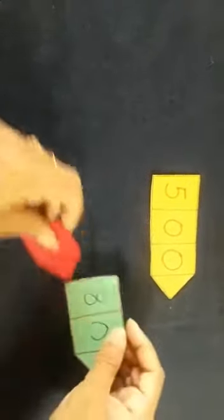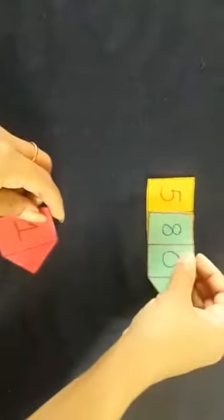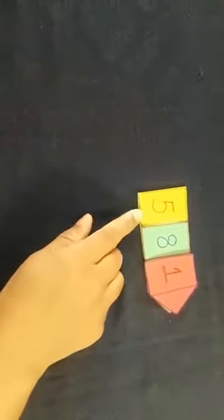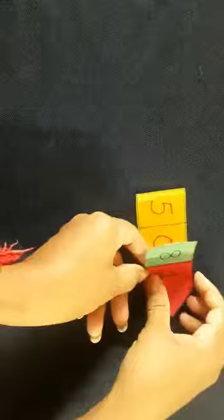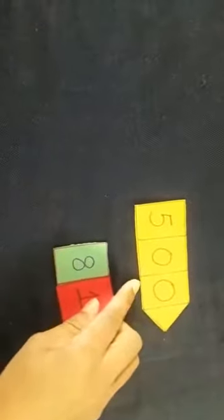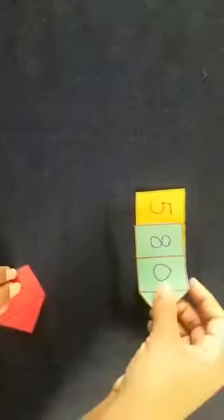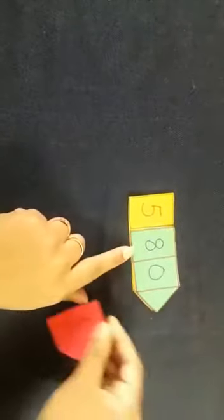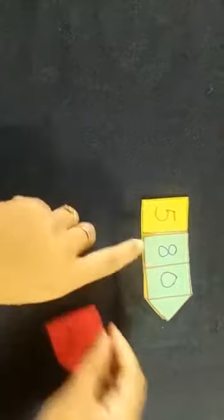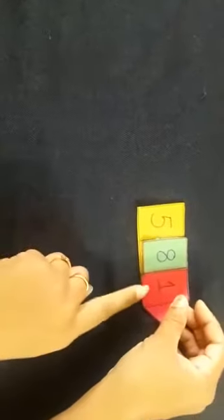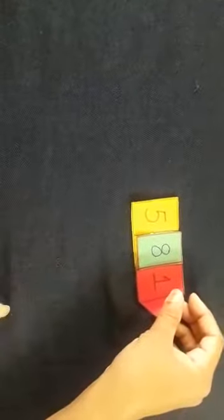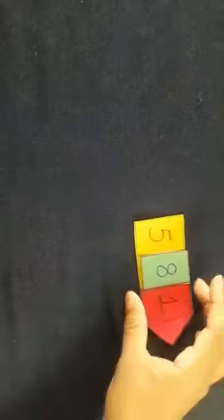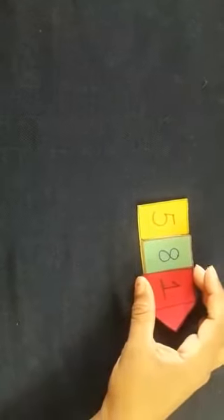If the number is this, the place value of five is five hundred. The place value of eight is eighty, which means eight tens. And the place value of one is one, which means one one. We can also learn the number names.